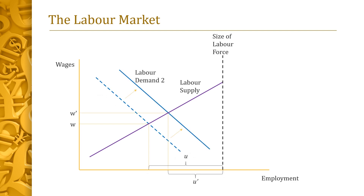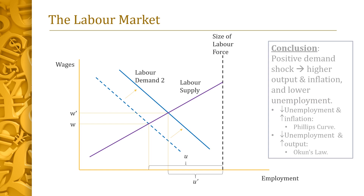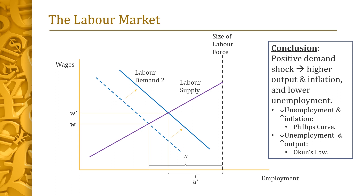Now suppose an increase in consumer demand makes it profitable for firms to raise output. This leads to a higher demand for labor. The labor demand curve shifts upward and to the right, as depicted. As a result, the equilibrium wage rises from W to W', and the unemployment rate falls from U to U'. Thus, a positive demand shock leads to higher output, higher wage inflation, and lower unemployment. Since falling unemployment coincides with rising inflation, we obtain the Phillips curve. Since it also coincides with rising output, we obtain Okun's Law.